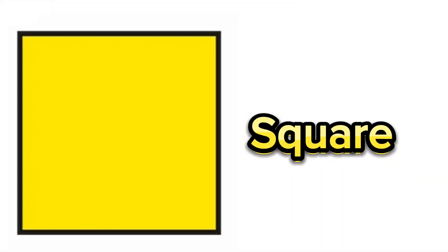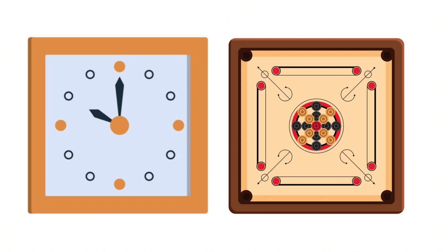Next is square. A square is a shape with four equal sides and four equal right angles. Examples of square objects are wall clock and carrom board. Do you all have a wall clock at your home? And do you like to play carrom? Oh yes, good job.